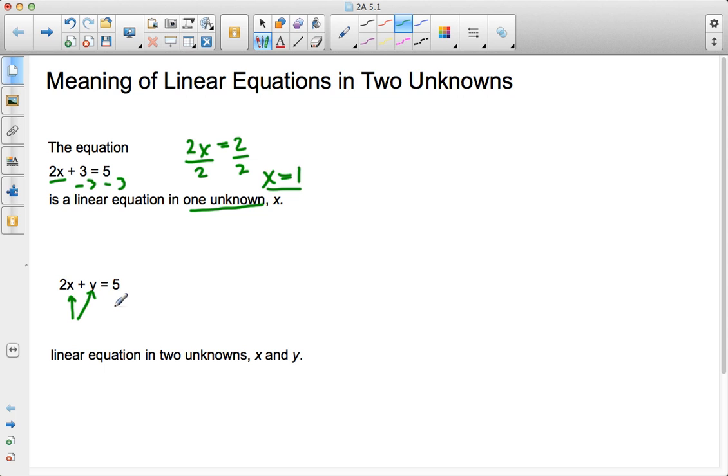So what I have to think about is how many solutions are there for this equation. Well, if y equals 1, then I would have 2x plus 1 equals 5. Subtract 1 from both sides. 2x equals 4, so x equals 2.